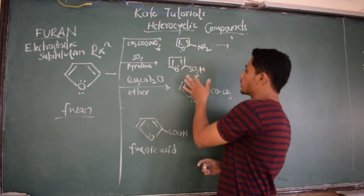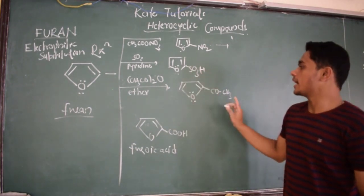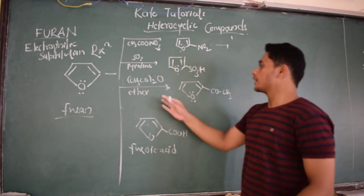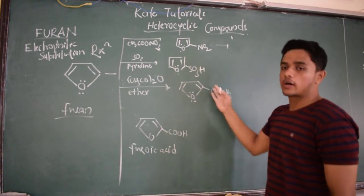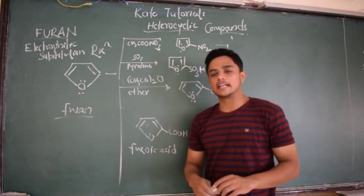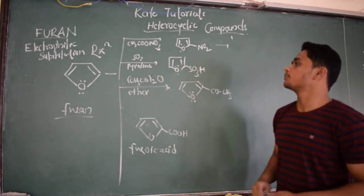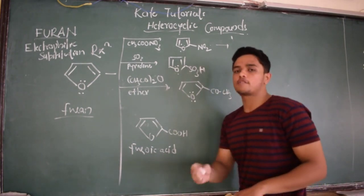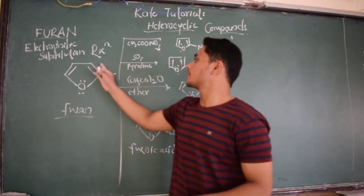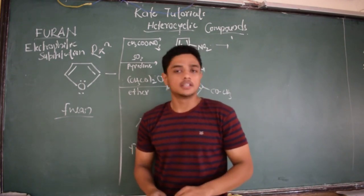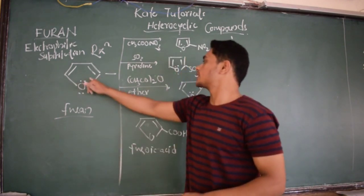In presence of ether and acyl group, we are going to get acylation - that is nothing but Friedel-Crafts acylation. All these are good examples for electrophilic substitution reaction. For halogenation, if I consider this furan and react it with halogen, then I am going to get destroyed structure because its structure will be destroyed.